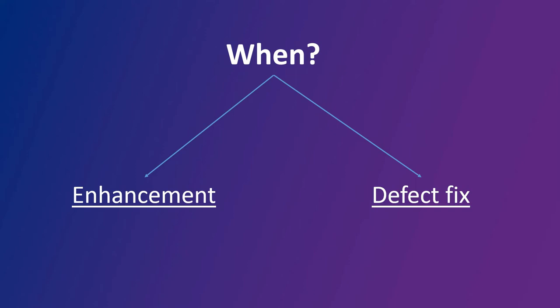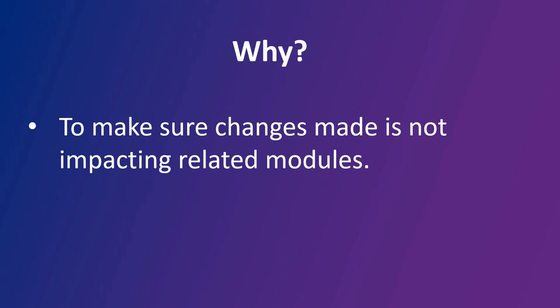Sanity testing is performed whenever there is an enhancement or a defect fix deployed to QA that is impacting other functionalities. Why do you do this? The quick check is done to make sure that nothing is getting broken just because some new code has been added which is impacting these modules. If you catch something in the initial phase it saves a lot of time. Sanity testing is a quick check on few impacted modules to make sure the code deployed is not impacting any existing functionalities.